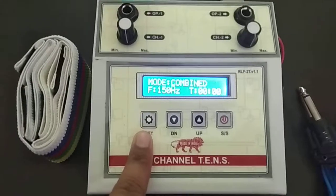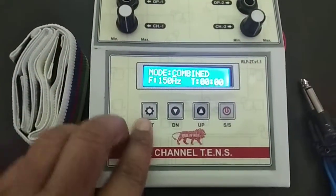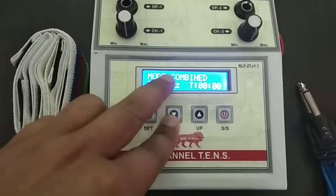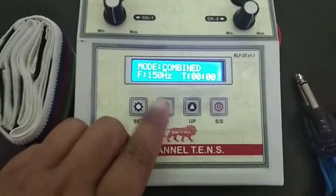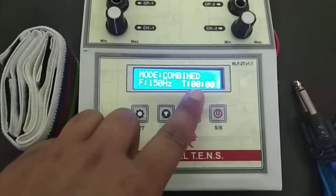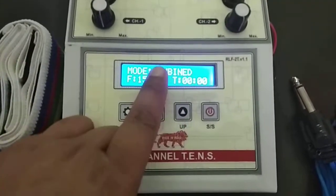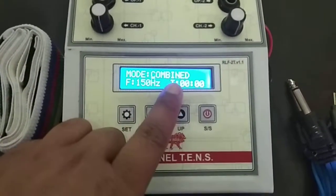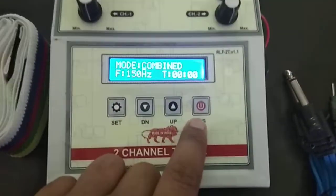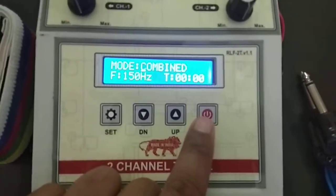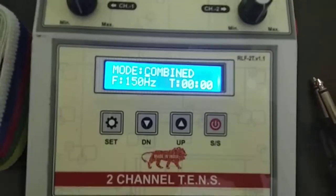This is setting key for setup the programs. This is down key for choosing the programs downward and also frequencies and treatment time. This is up key for selecting programs, frequencies and treatment time upward. And this is start and stop key for starting or stopping the programs.